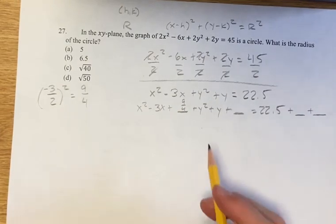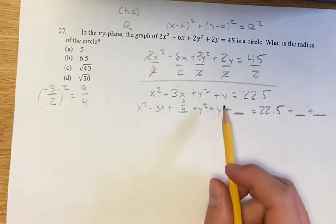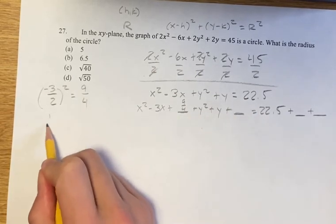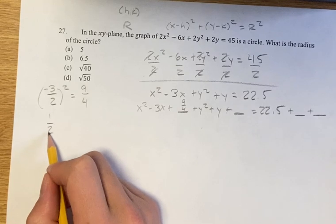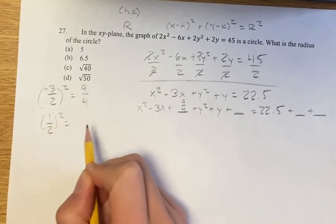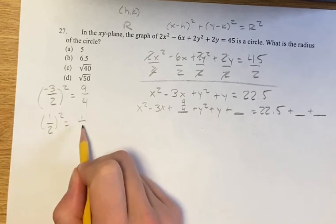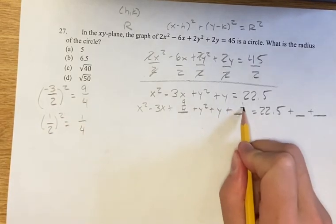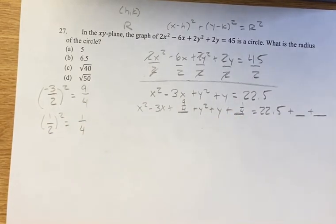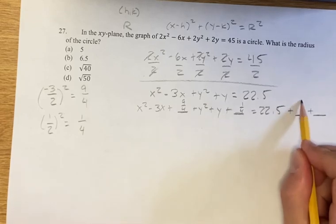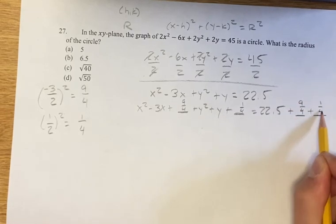Then we have y squared plus y. The middle term coefficient is 1, so we take 1 over 2 and square it: 1 squared over 2 squared is 1 over 4. So we add plus 1 fourth. To keep the equation equal, we also add 9 fourths plus 1 fourth to the right side.